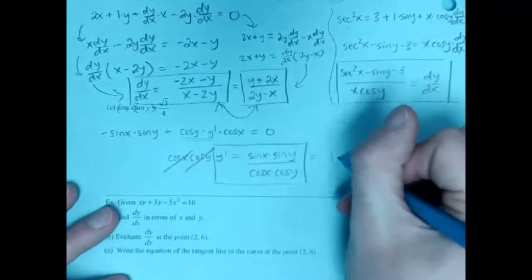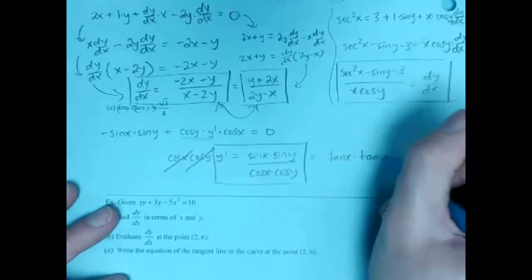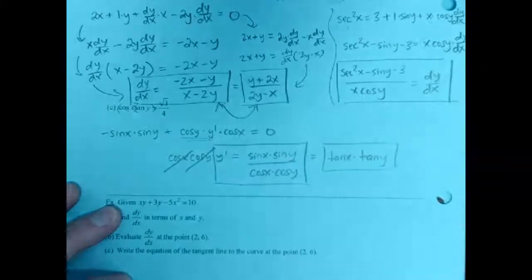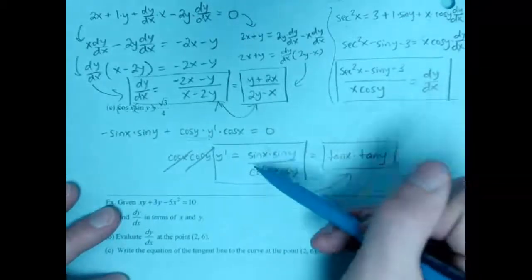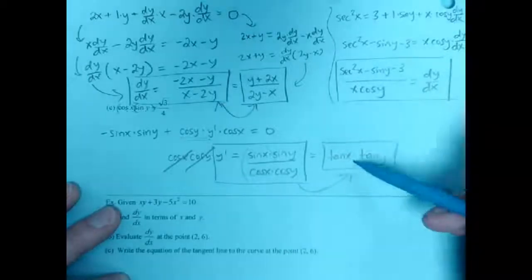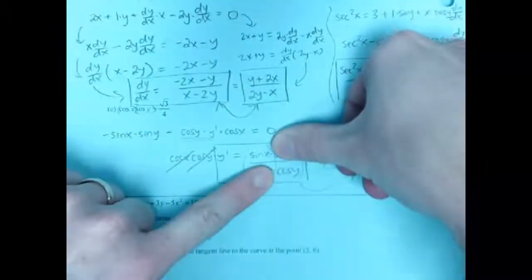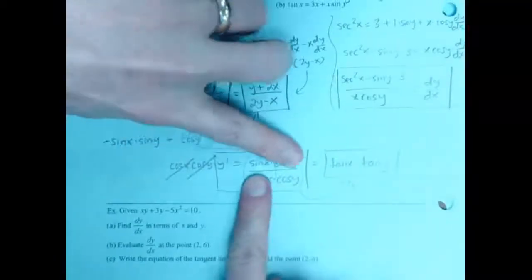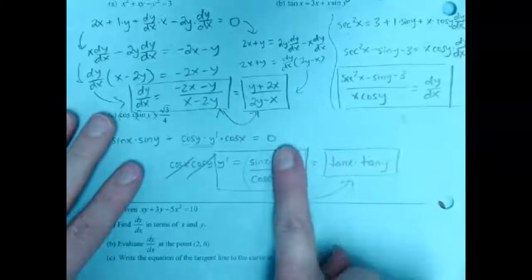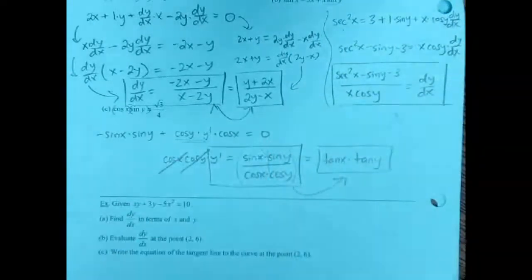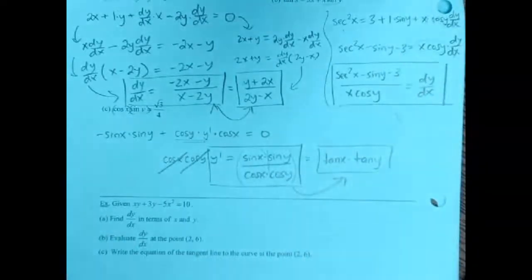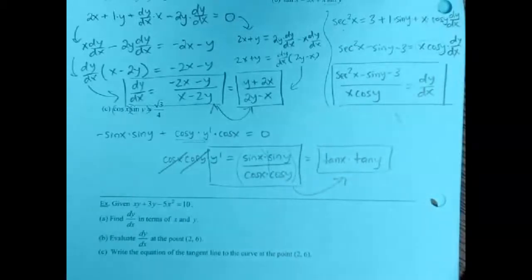That simplifies to tan(x)·tan(y), since sin(x)/cos(x) = tan(x) and sin(y)/cos(y) = tan(y). Note: you can only combine trig functions this way when they have the same argument — you cannot combine trig with different arguments into a single tangent. So y prime = tan(x)·tan(y). I'm going to stop this video here and pick up with the next example in the next video. Thank you.